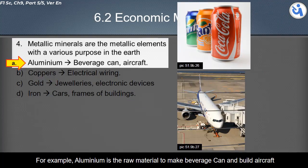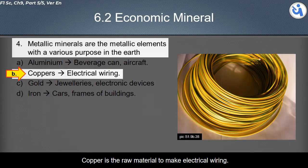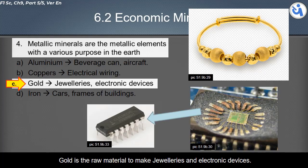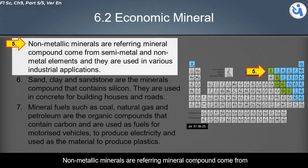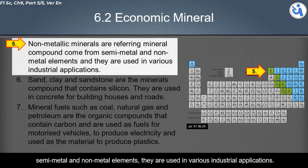Metallic minerals are metallic elements with various purposes. For example: aluminium is the raw material to make beverage cans and build aircraft; copper is the raw material to make electrical wiring; gold is the raw material to make jewelry and electronic devices; and iron is the raw material to make cars and frames of buildings.